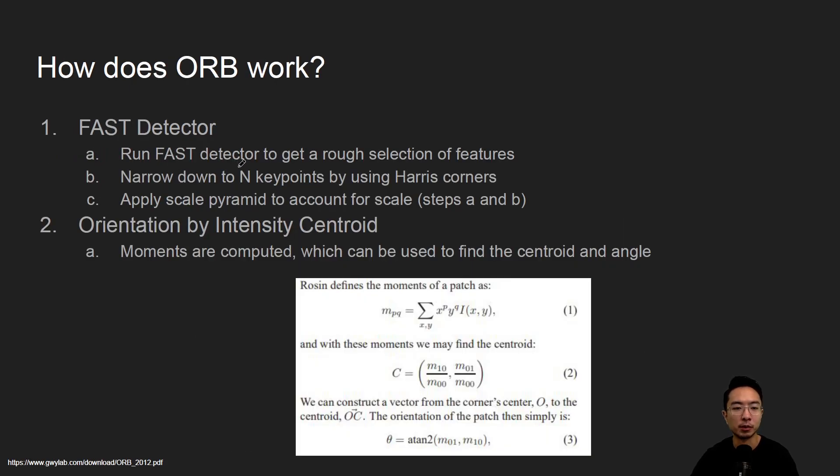So how does ORB work? The first part is the FAST detector. We talked about the FAST detector previously, but the idea is you first run the FAST detector to get a rough selection of features. And then you want to narrow down to N key points by using Harris Corners.